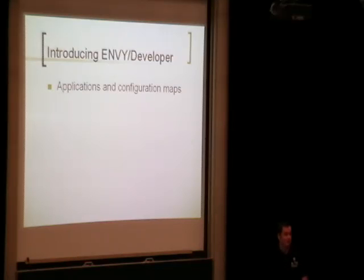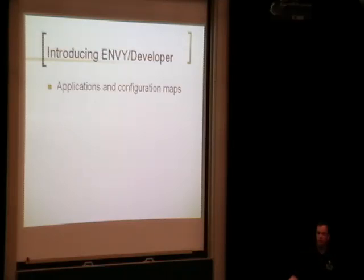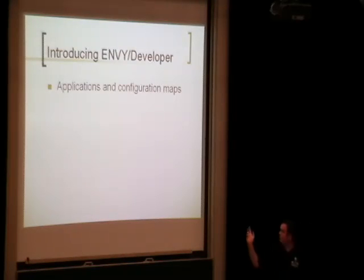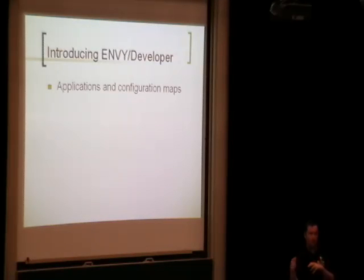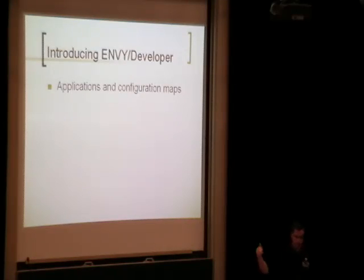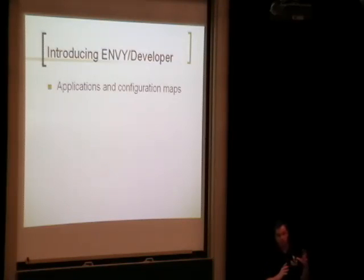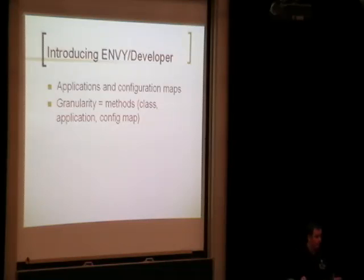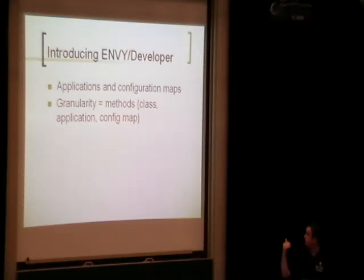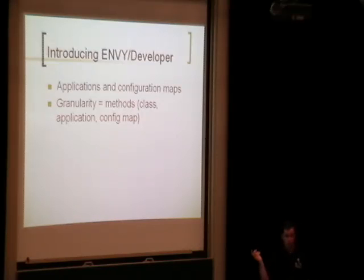Envy uses two things called applications and configuration maps to hold your code. If you use Store, you'll have bundles and packages — bundles and packages are roughly like applications, and bundles somewhat mimic configuration maps. In an application, you can have other applications, classes, or class extensions, plus prerequisites of other applications. A configuration map includes applications and a list of all the other configuration maps and prerequisites. The granularity in Envy is at the method level, so you can see all versions of a method, class, application, and configuration map.